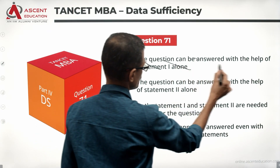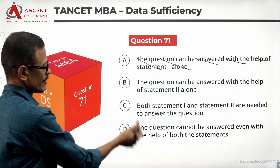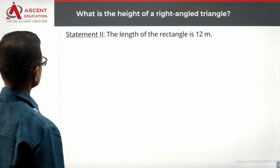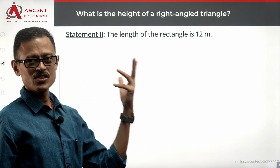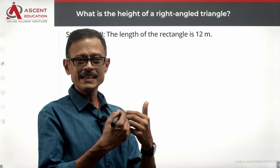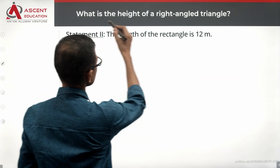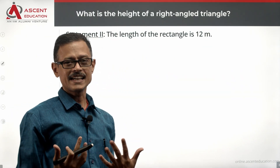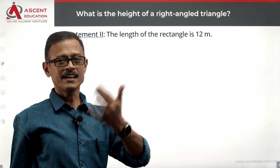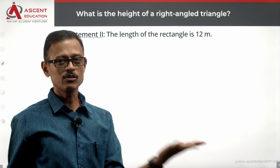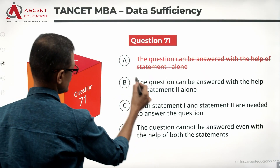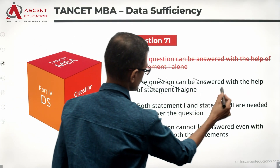We rule out answer option A. Let's take a look at Statement 2 alone and see whether that is sufficient. Statement 2 says the length of the rectangle is 12. However, without Statement 1, this information alone is completely irrelevant — we cannot determine the height of the right triangle. Therefore, Statement 2 alone is also not sufficient, and we eliminate answer option B.